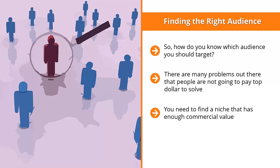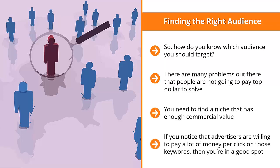One way to estimate this is to use Google AdWords Keyword Planner and do cost-per-click research on keywords related to your niche. If you notice that advertisers are willing to pay a lot of money per click on those keywords, then you are in a good spot. Chances are, there is enough commercial demand for that niche, and people are willing to pay a significant amount of money to solve problems related to it.